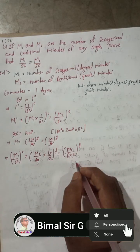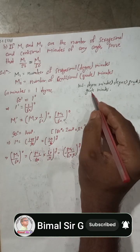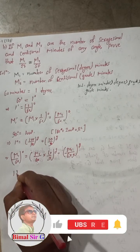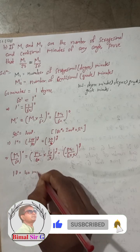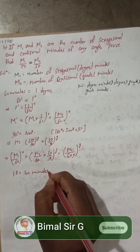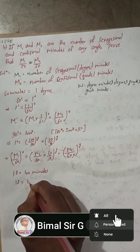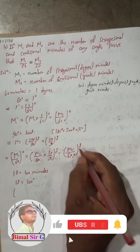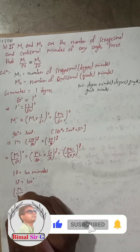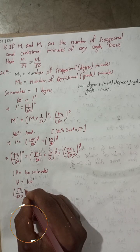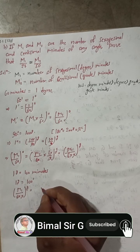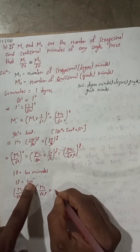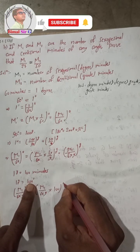Now I need to convert from grades to grade minutes. The formula is: one grade equals 100 grade minutes. So substituting m1/(6×9) in place of one grade, I get m1/(6×9) × 100 grade minutes.